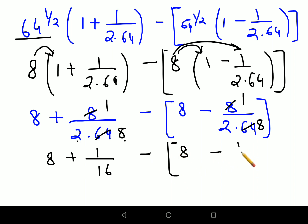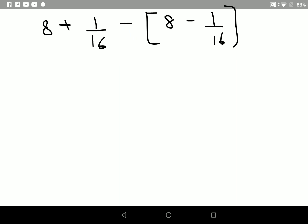You have 8 plus 1/16, there's a minus sign, then you have minus 8 minus 1/16. I'm assuming a lot of people would have now figured out. Opening the brackets, you will have 8 plus 1/16 minus 8 plus 1/16.